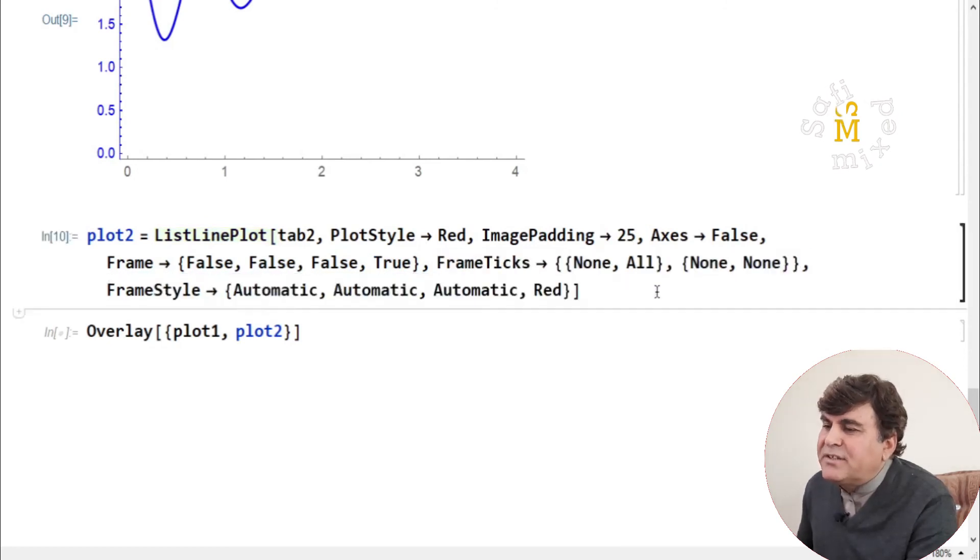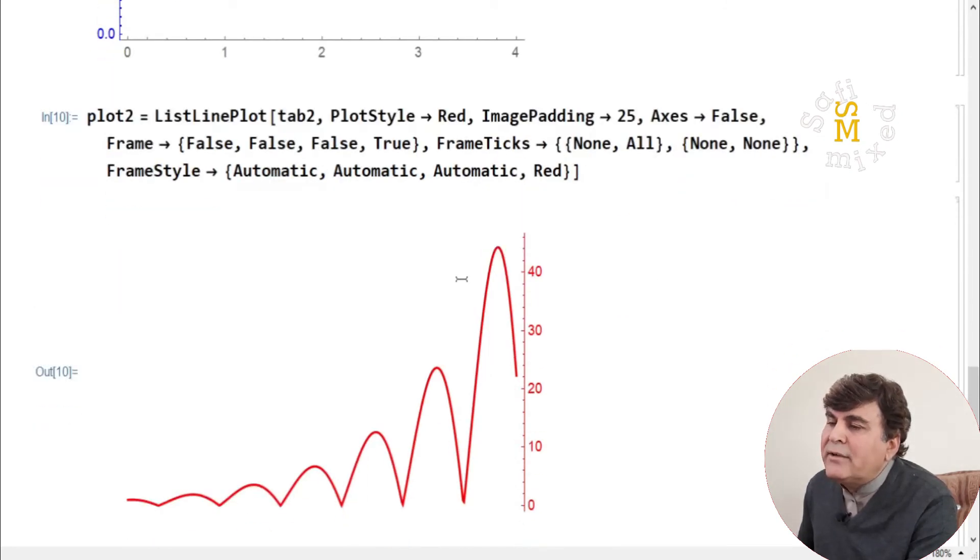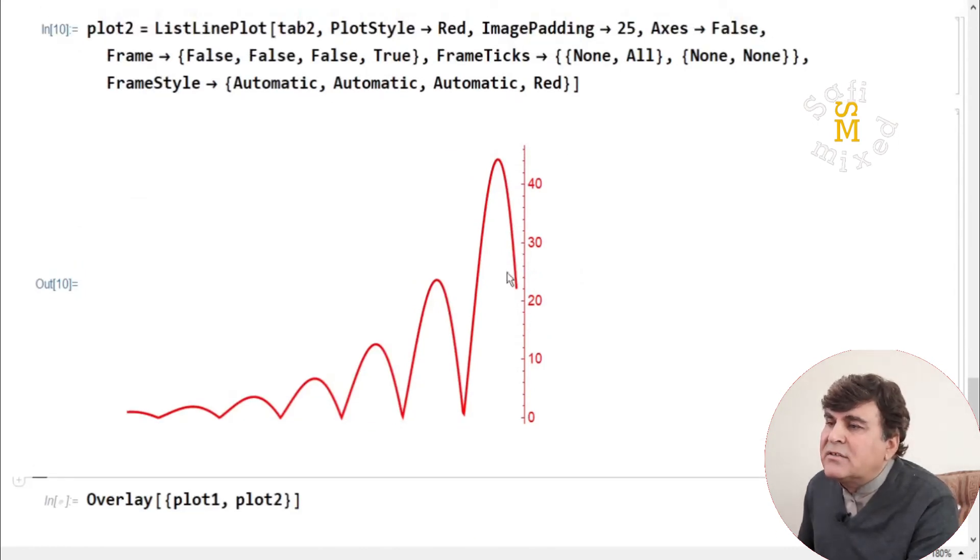If I run this, I get a plot with red values and only one ordinate at the right which is red. This red color comes through this command, and the values come through this, and this ordinate comes through this command.